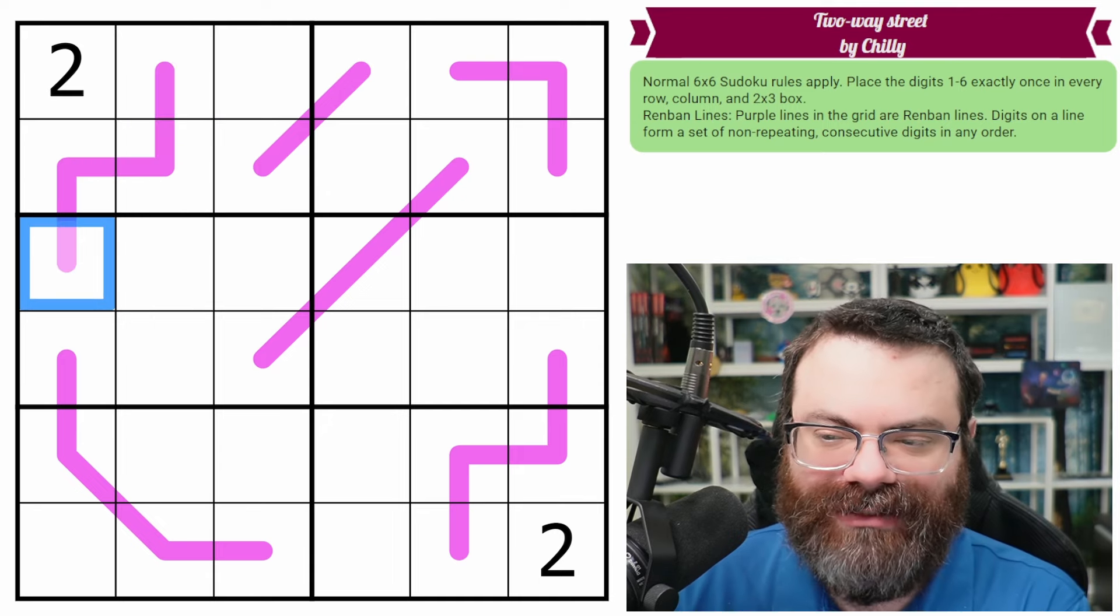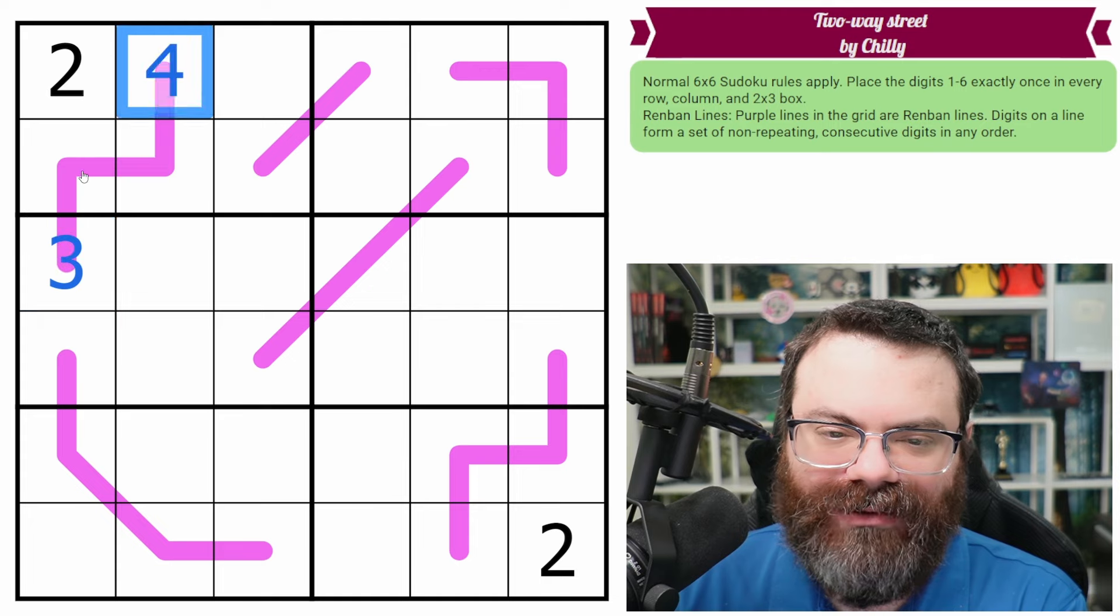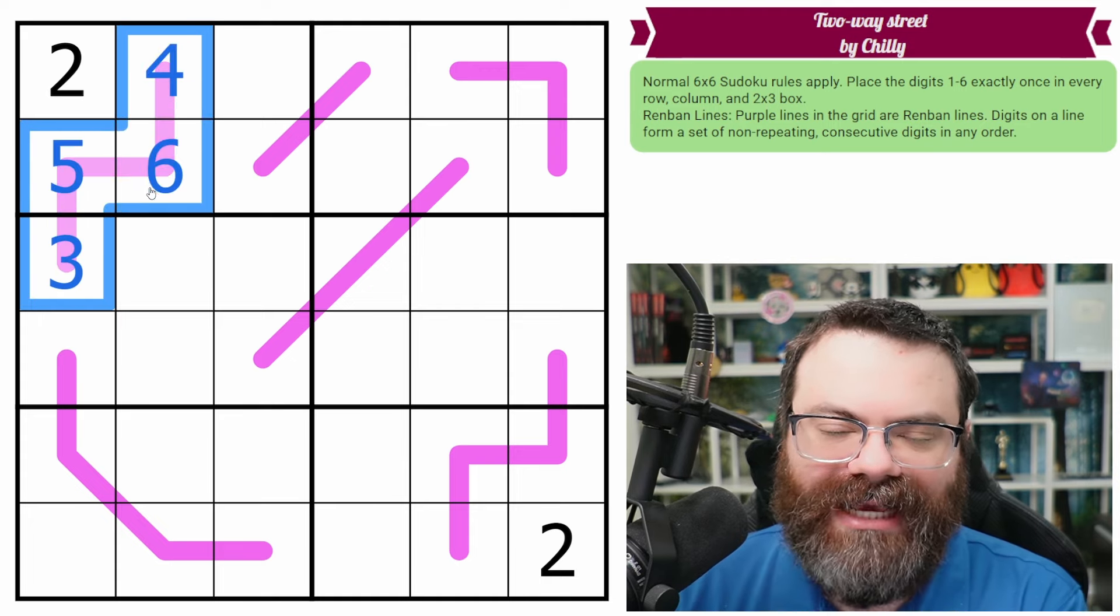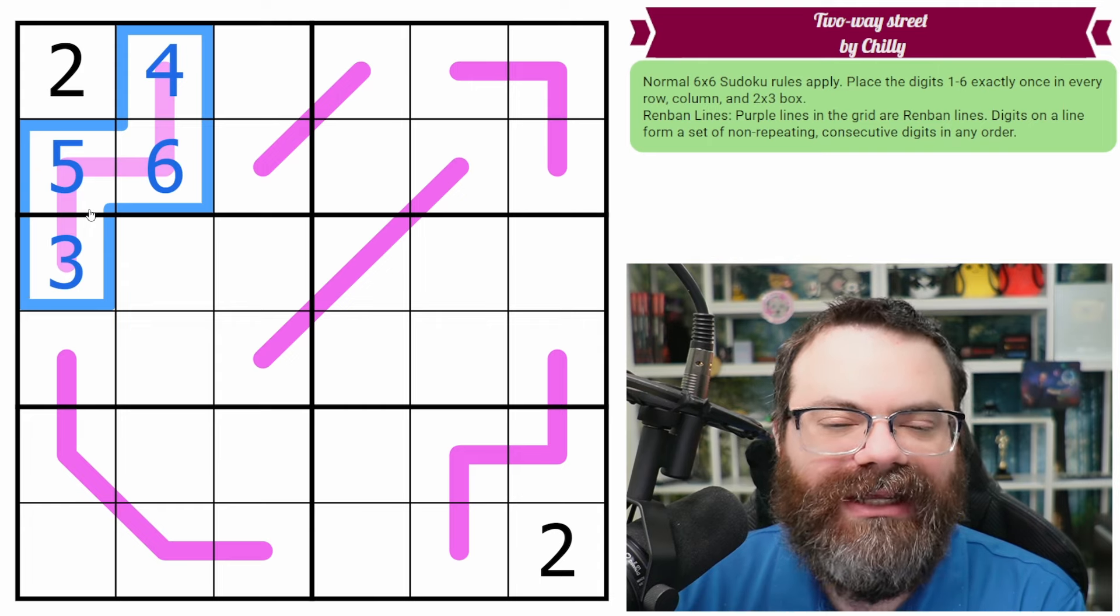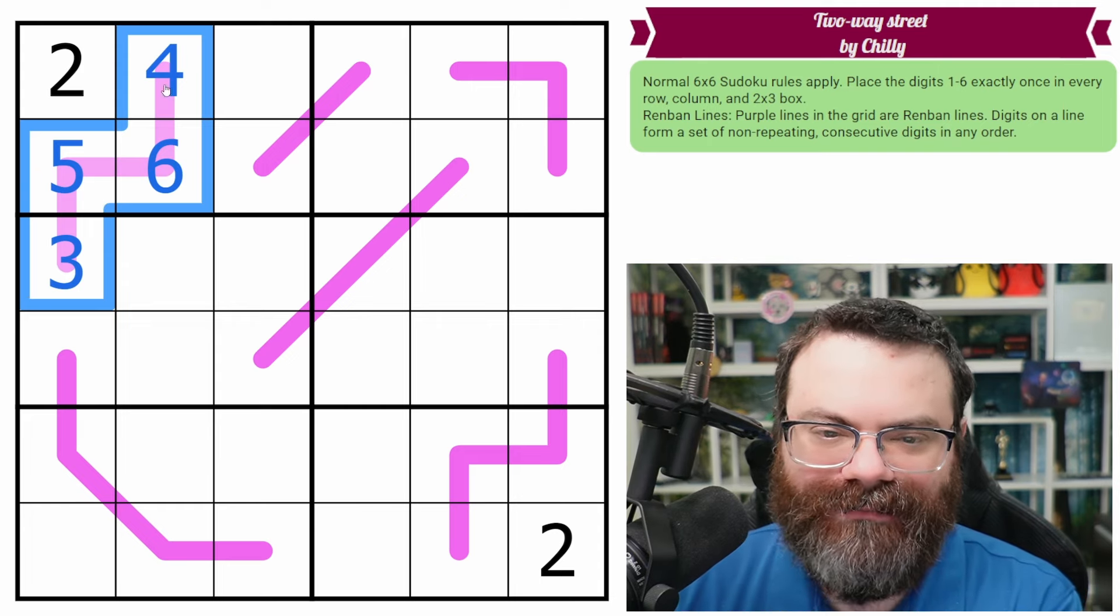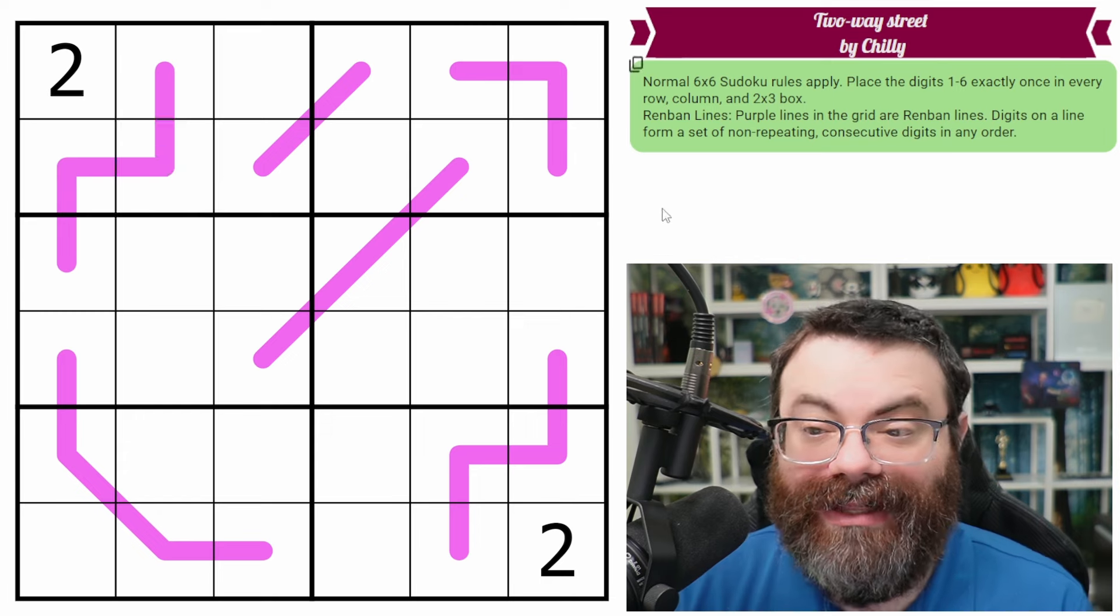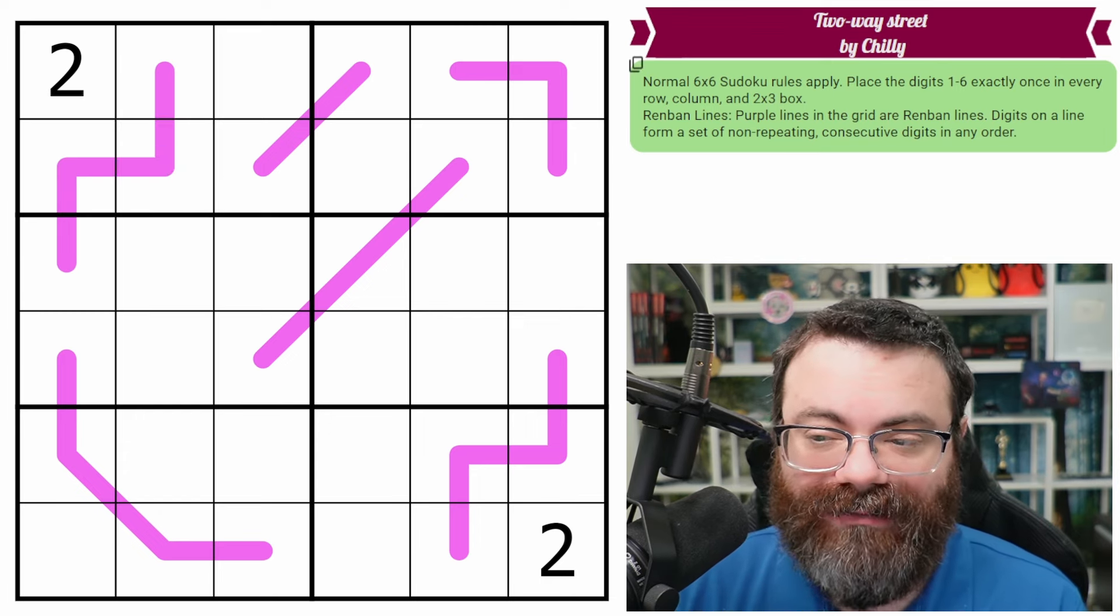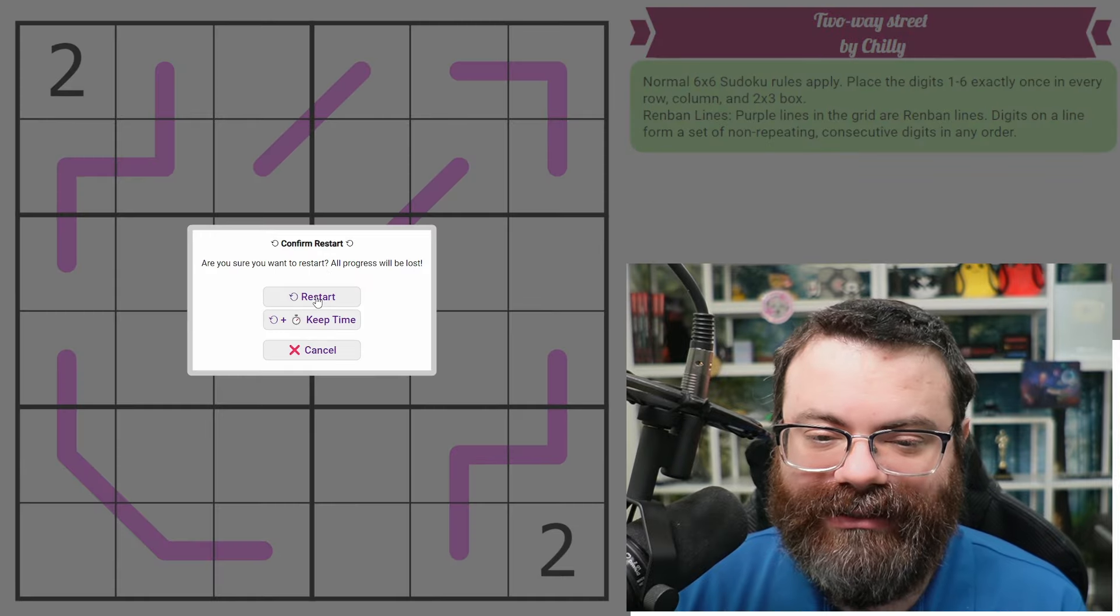So let's say this one was 3, 4, 5, 6. Then we could go 3, 4, 5, 6 like that. The order is unimportant. What matters is if you take the digits as a whole group, they end up consecutive with no holes and no repeats. And that's it. Those are all the rules. There's a link in the description if you'd like to try the puzzle yourself. And I'm going to get started right now.